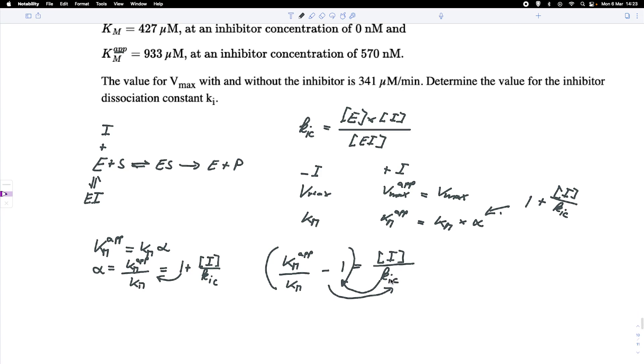And what I then get is KIC equals the inhibitor concentration divided by KM up over KM minus 1.